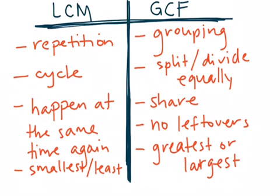To wrap up, here's the T-chart again. For LCM: repetition, cycle, happening at the same time, smallest or least. For GCF: grouping, splitting, or dividing equally, sharing things, no leftovers, or looking for the words 'greatest' or 'largest.' This is how you figure out the difference between LCM and GCF word problems.